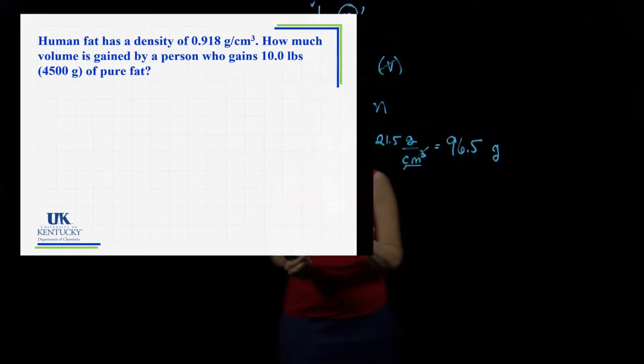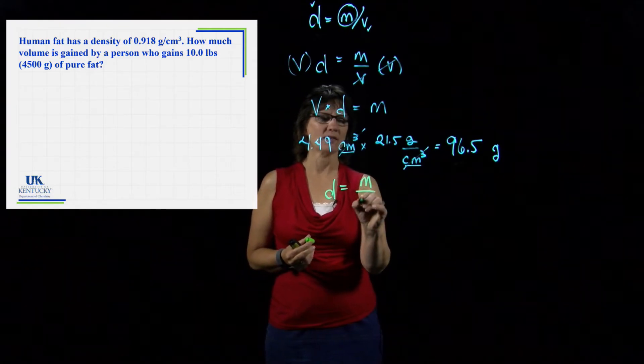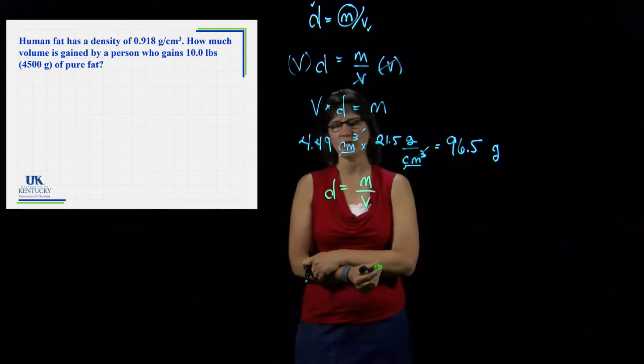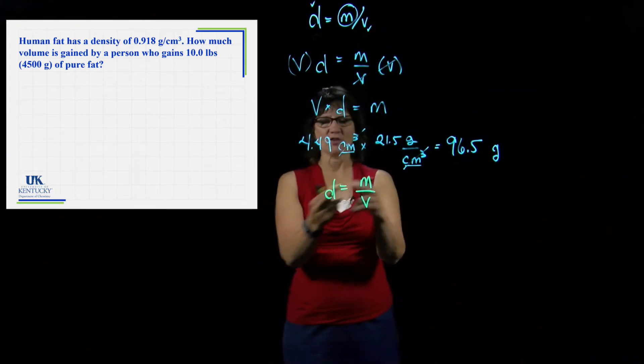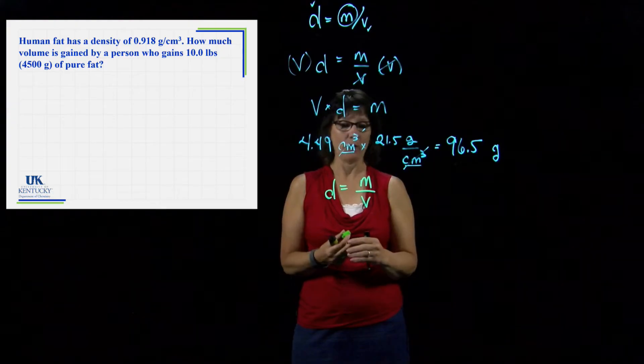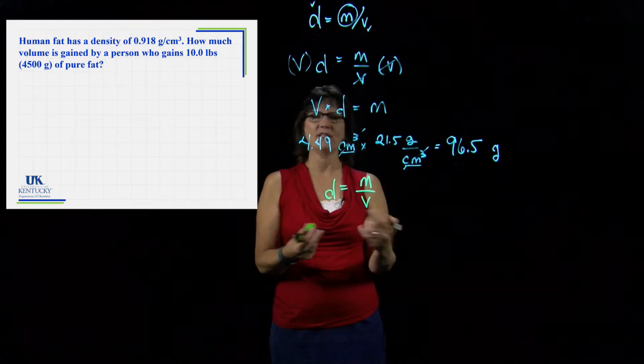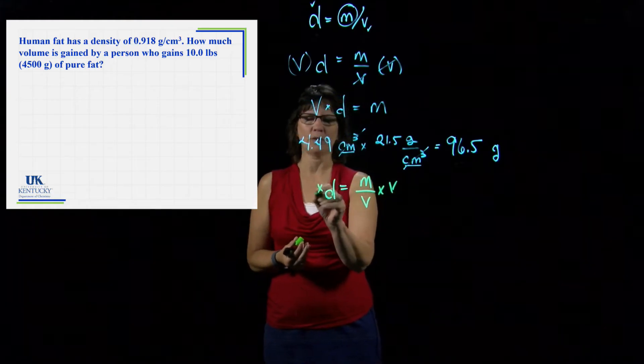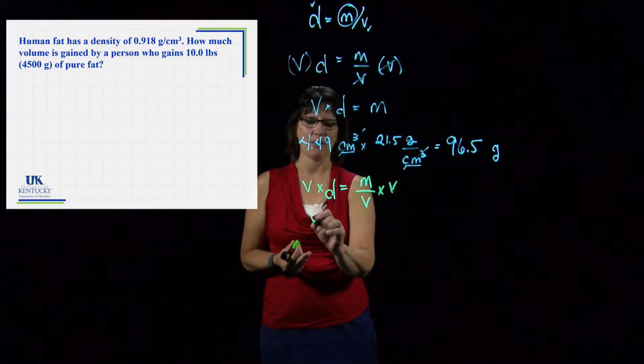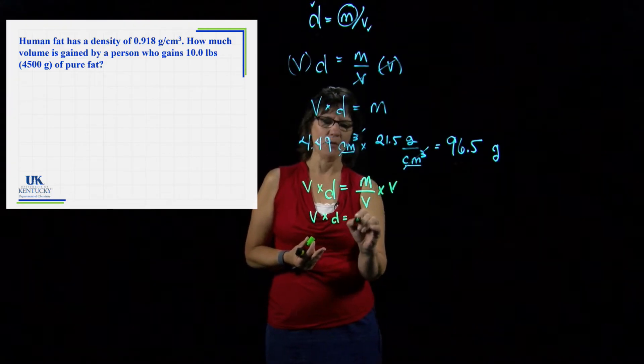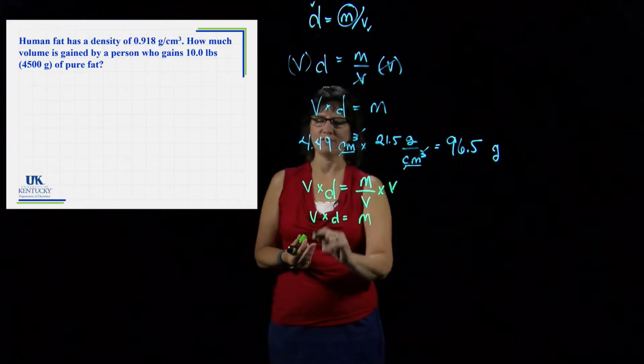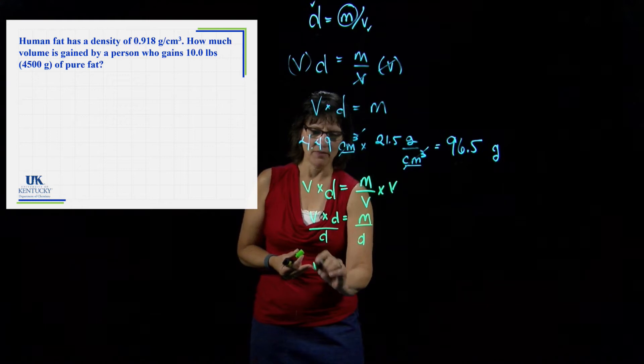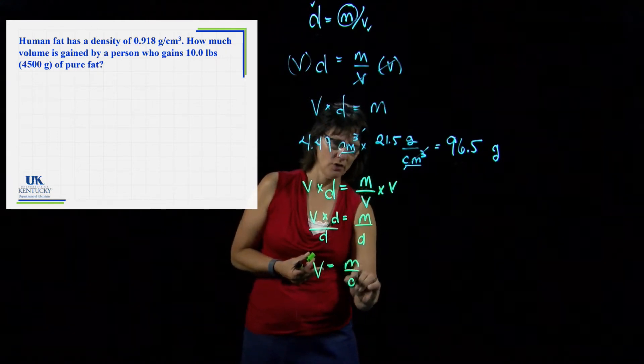Let's work through this problem. We start with our formula: Density equals mass over volume. But in this example, we're wanting to solve for volume. I need to get the volume out of the denominator. Let's multiply both sides by volume. Volume times density equals mass. But what I'm wanting to solve for is the volume. So I will divide both sides by density. That will give me that the volume is mass over density.